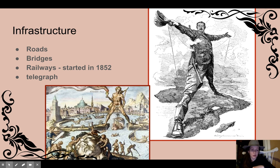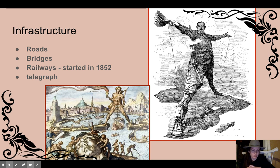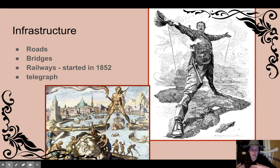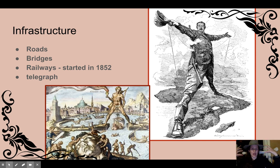I want to show you this political cartoon: the Rhodes Colossus, subtitled 'From Cape Town to Cairo.' The image on the left is the Colossus of Rhodes, one of the ancient wonders of the world. This cartoon is a visual pun — while that is the Colossus of Rhodes, this is the Rhodes Colossus. Think about what the word 'colossal' means. For political cartoons, remember how size shows power and significance.